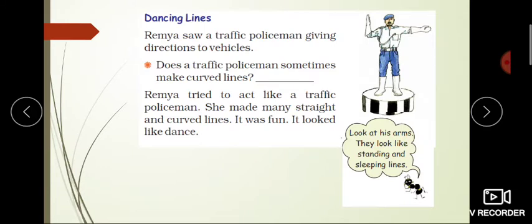The first topic is Dancing Lines. Remia saw a traffic policeman giving directions to vehicles. Remia is a little girl who saw a traffic policeman directing vehicles.